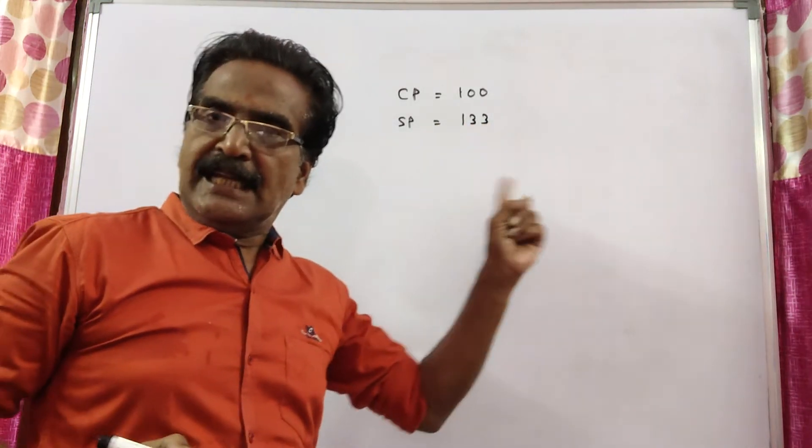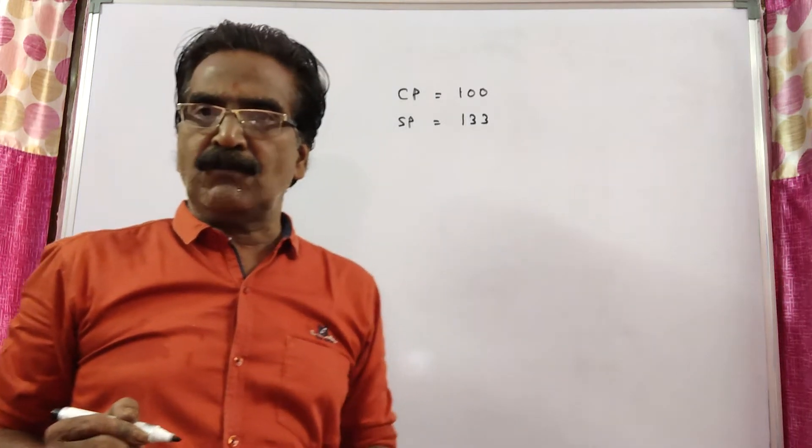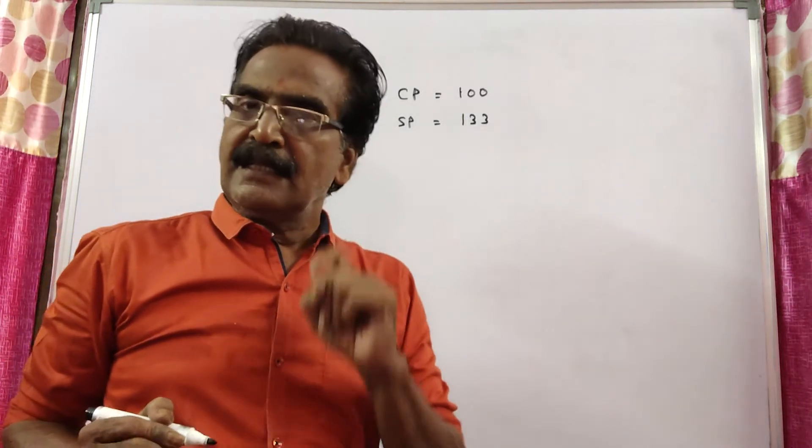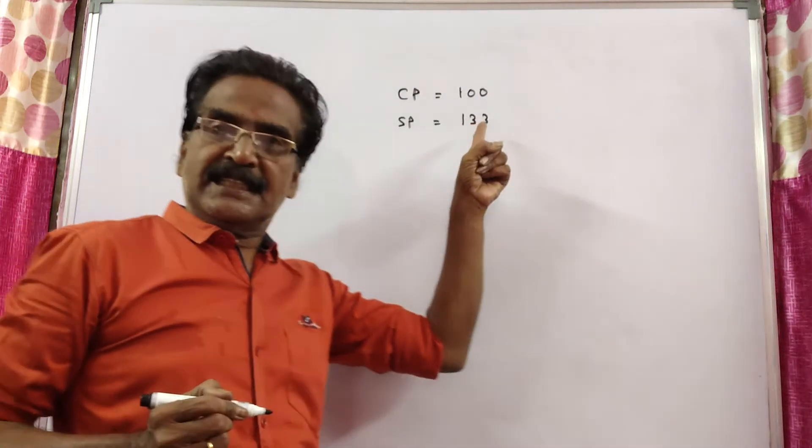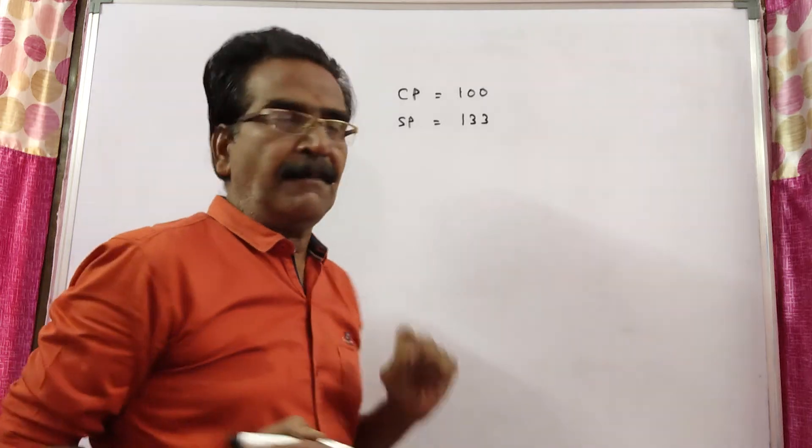This selling price 133 is after allowing a discount of 5%. That means this 133 is equal to 95% of the market price.